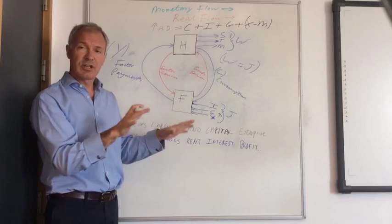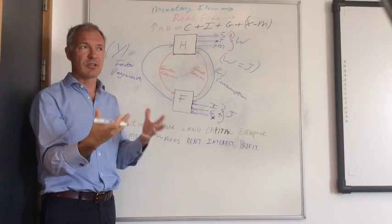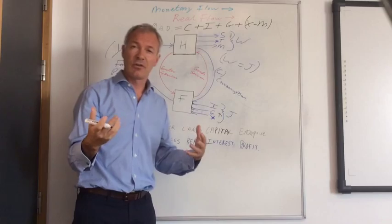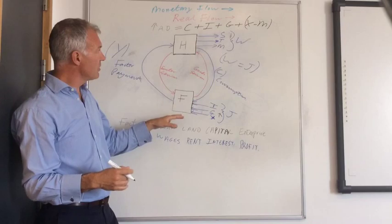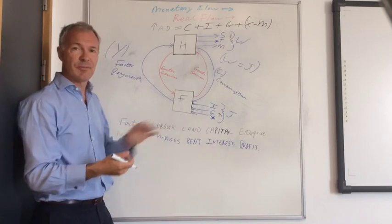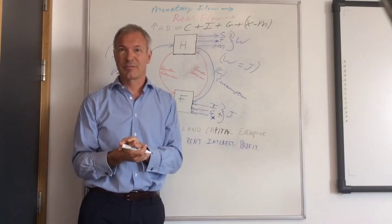So, this is basically the circular flow of income, and it should help you understand what happens to an economy when, ceteris paribus, other things being equal, you change any of these variables in the economy. So, thank you very much. I hope that makes sense. Thank you very much.